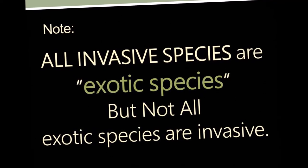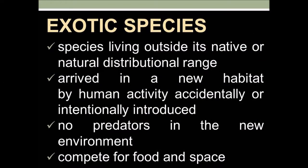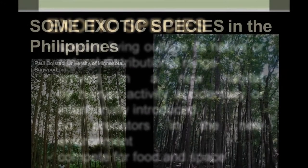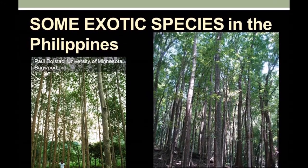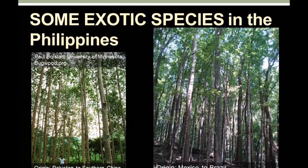Take note that although all invasive species are exotic, not all exotic species are invasive. So, what are exotic species? These are species that occur outside their natural or native range of distribution. They might have arrived in a new habitat by human activity, accidentally or intentionally introduced for food or other purposes. However, these introduced species usually do not have predators in their new environment, and they compete with the original species for food and space. Hence, although many believe that not all exotic species have negative impacts, biologists are still alarmed by the fact that some may have unknown threats due to lack of study.